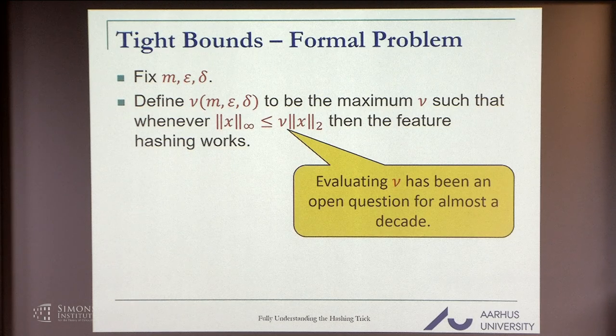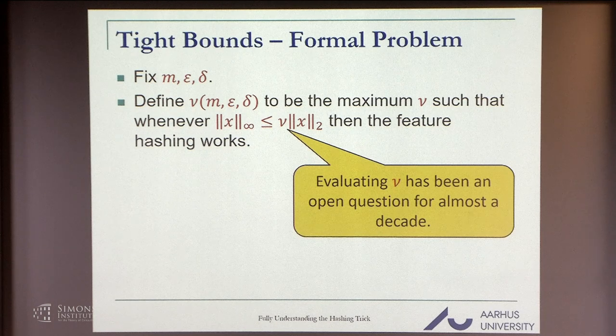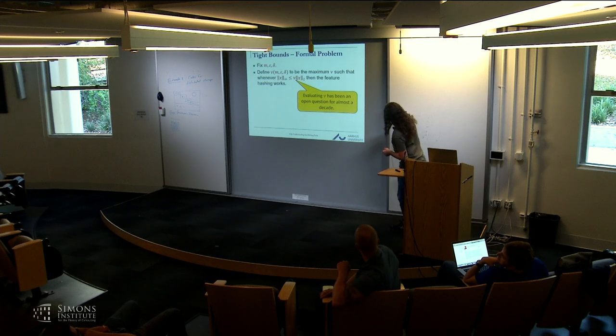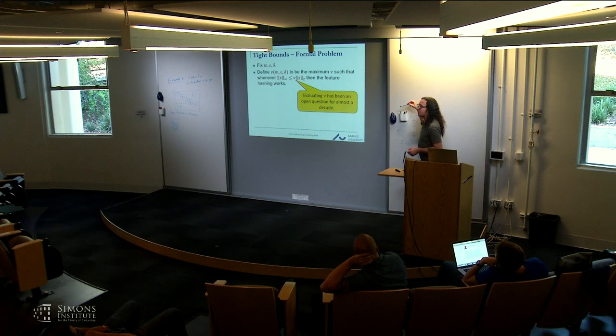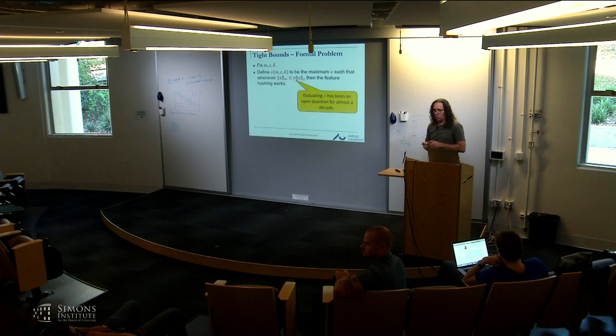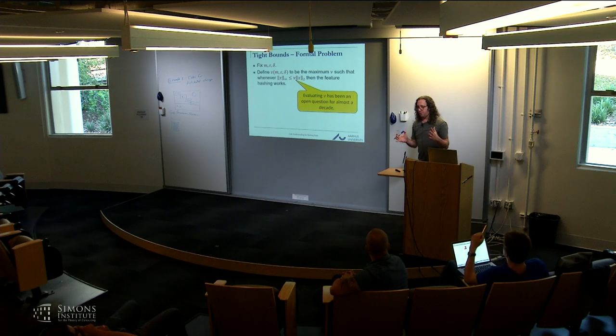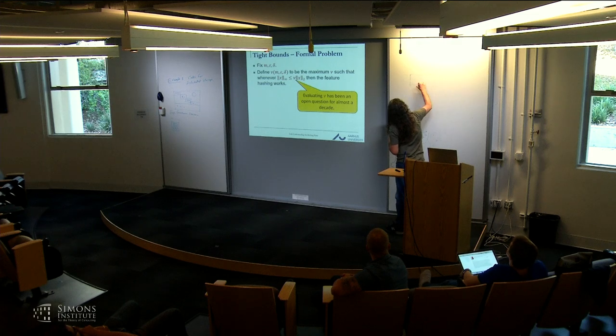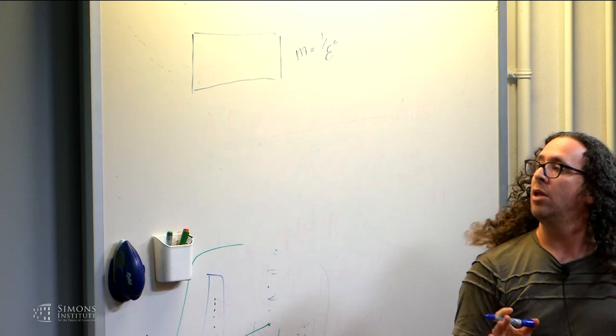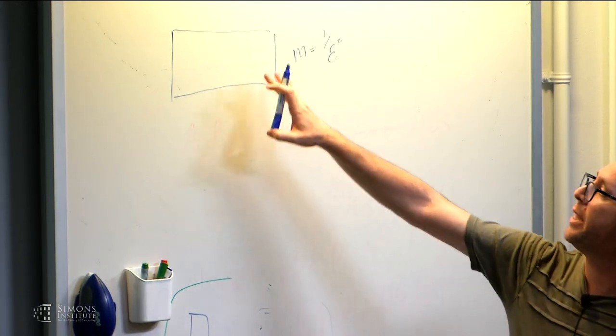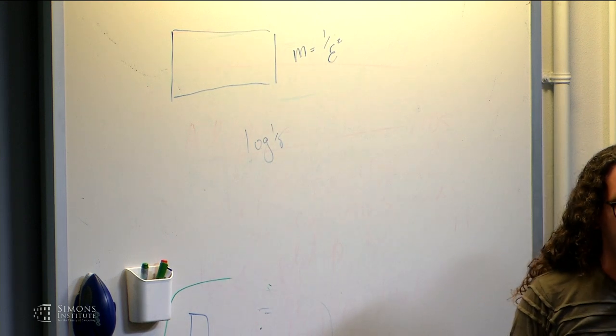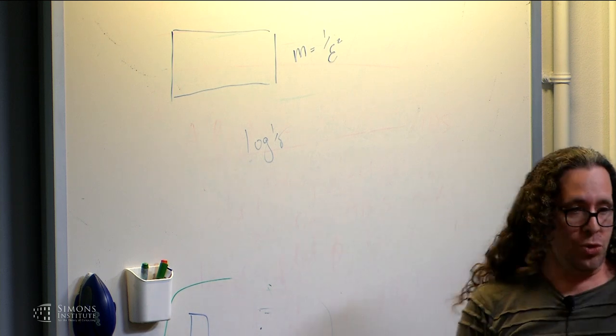Evaluating nu was basically open since the original paper by Weinberger and Adal. The question was if this is just count sketch with one building block. The answer is yes, although the perspective is a little bit different. With m equals 1 over epsilon squared, this is exactly count sketch.